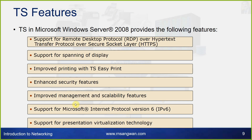Terminal Service features in Microsoft Windows Server 2008 include: support for Remote Desktop Protocol (RDP) over HTTPS, support for spanning of display, improved printing with TS EasyPrint, enhanced security features, improved management and scalability features, support for IPv6, and support for presentation virtualization technology.